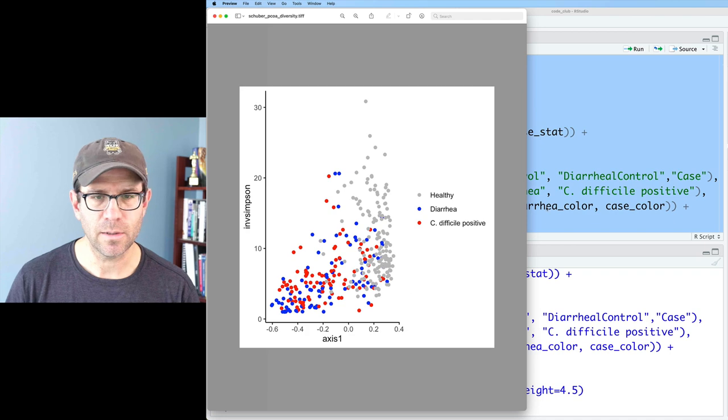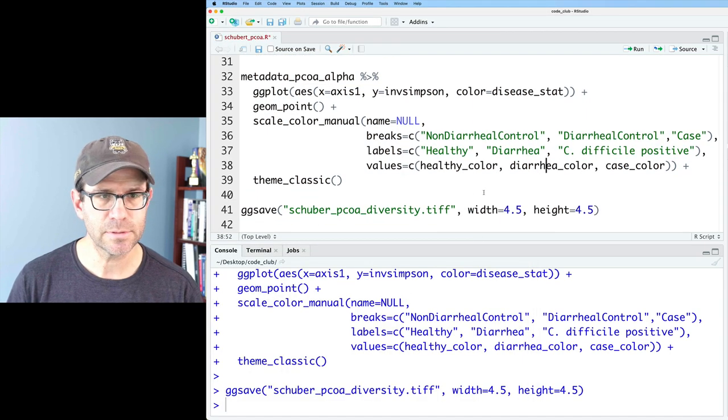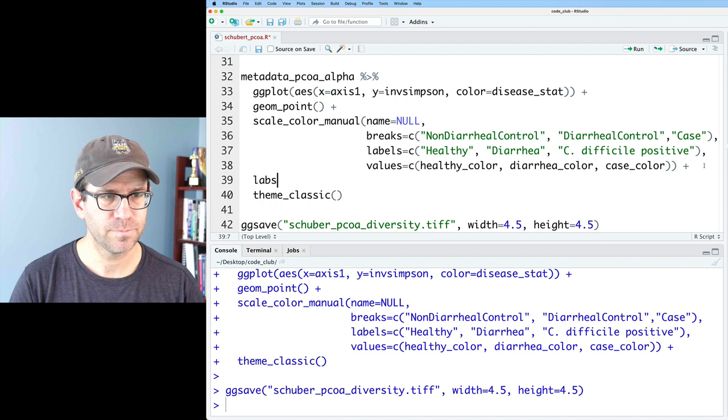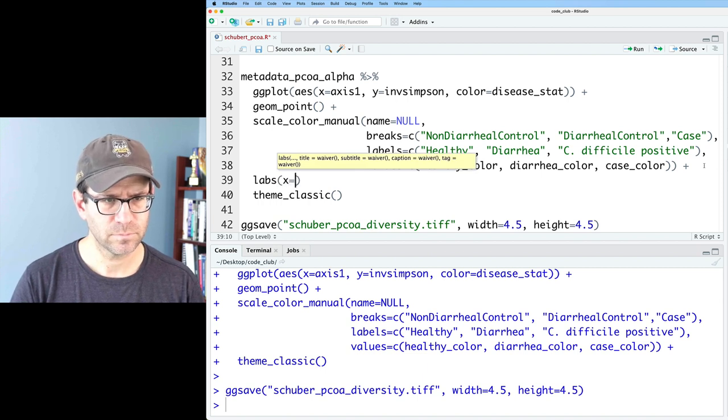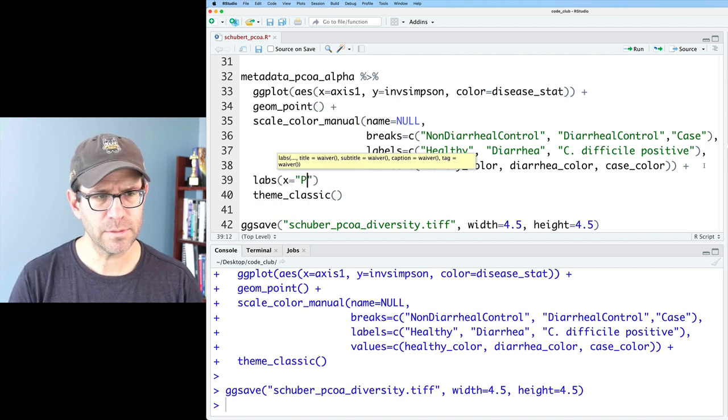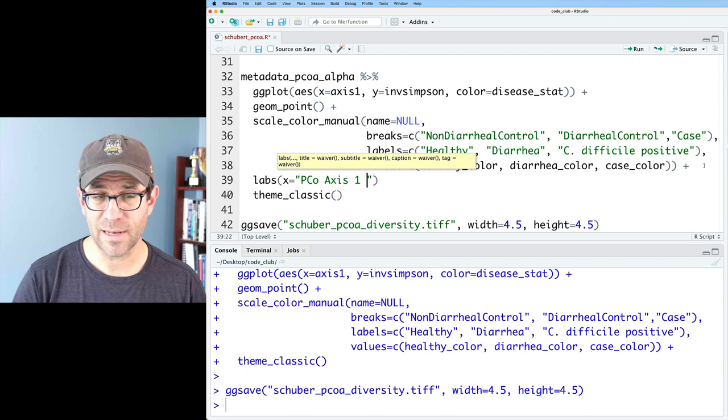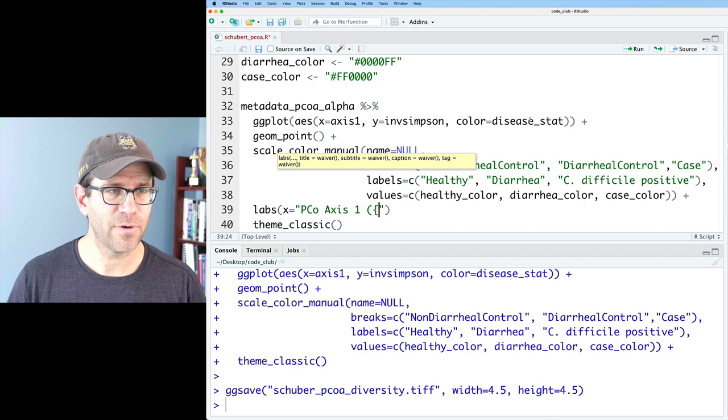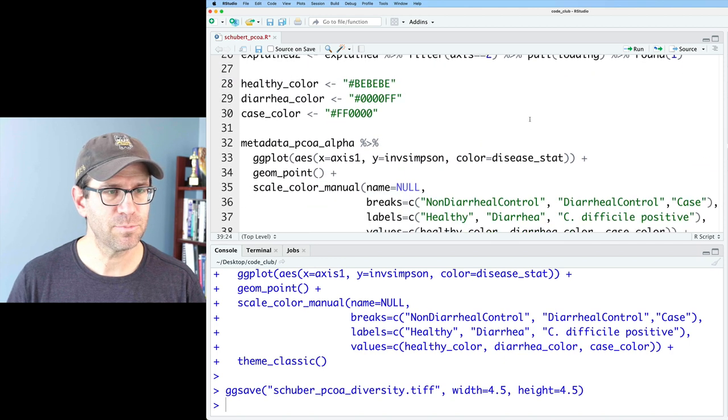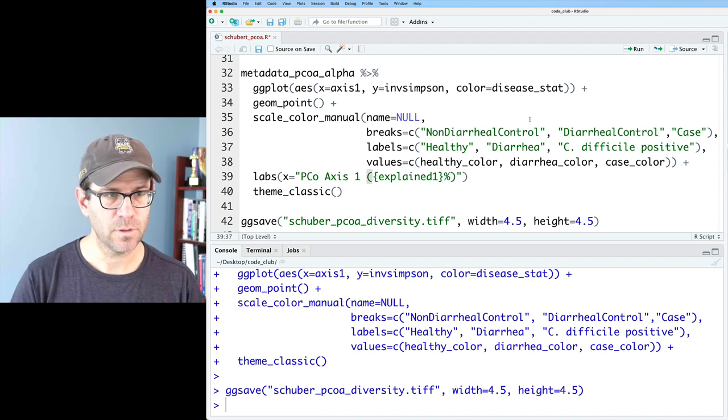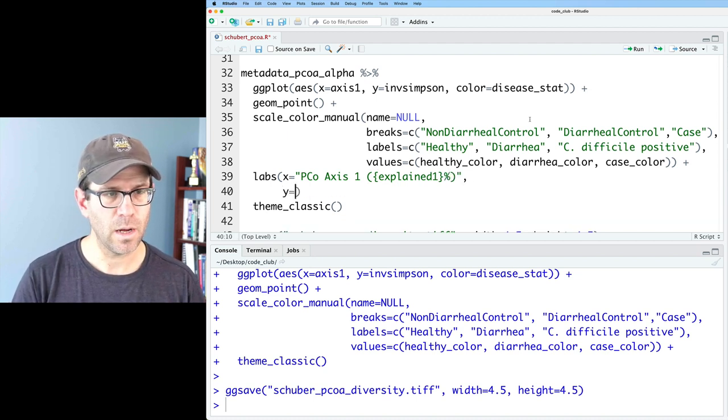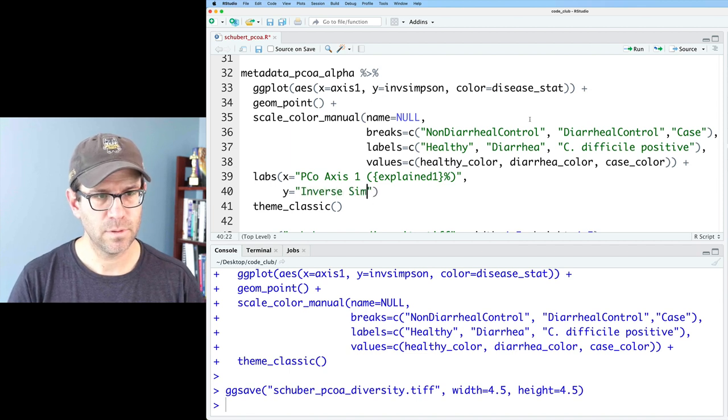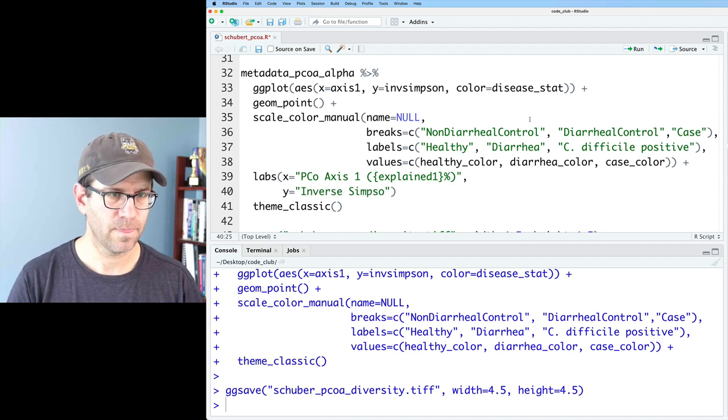Let's go ahead and clean up our X and Y axis labels. And to do that, we can do labs and we'll do X equals PCO axis one. And I'll go ahead and put in my cool glue. And we will do, what is this variable up here called? Explained one. Close curly brace, and I'll put a percent with the closed parentheses. And then Y I will do inverse Simpson index.